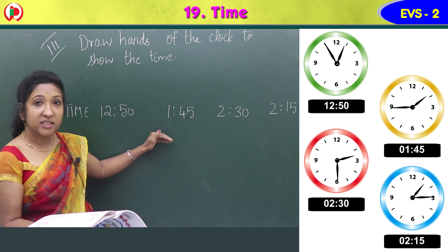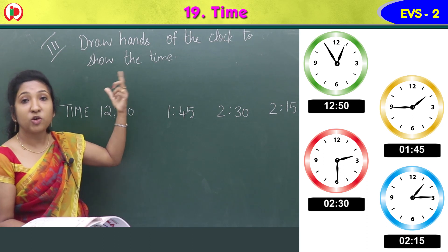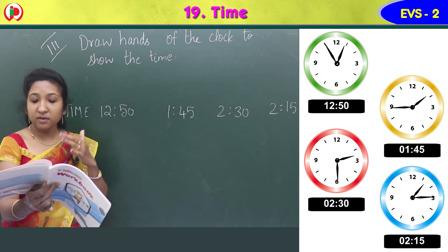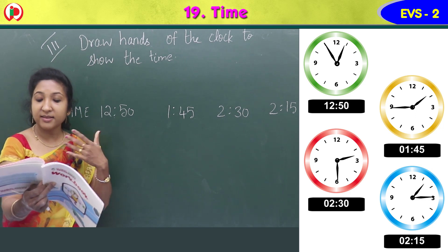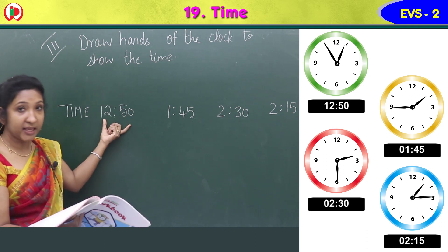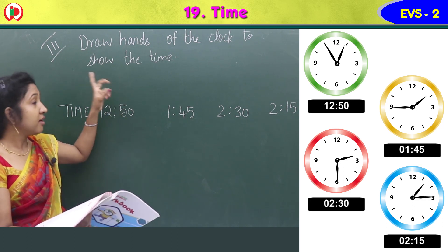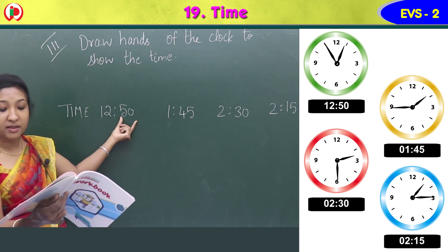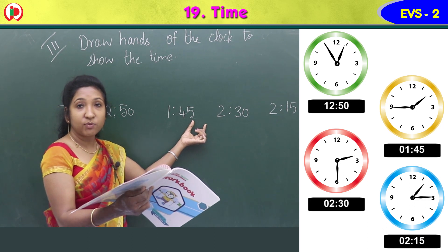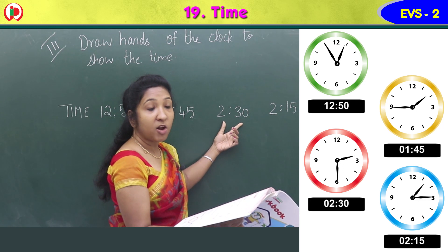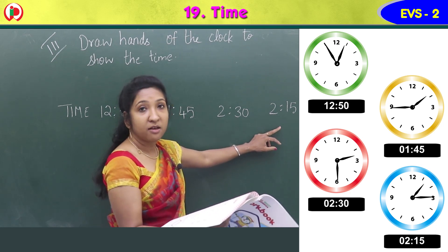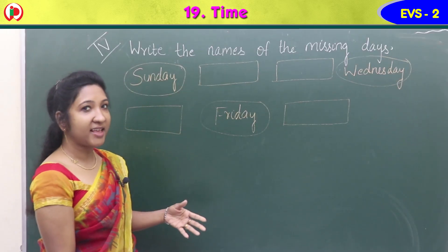There are four clock images with timings given. Draw the hands on each clock. For 12:50, the smaller hand at 12 and the bigger hand at 10. For 1:45, the smaller hand at 1 and the minute hand at 9. For 2:30, the smaller hand at 2 and the longer hand at 6.